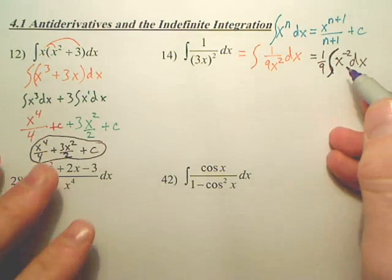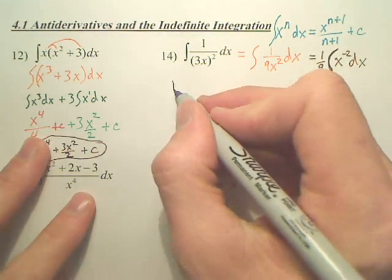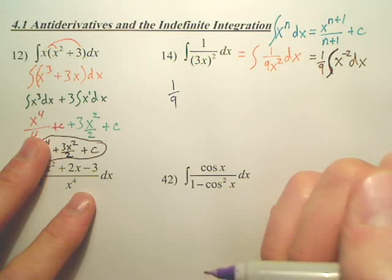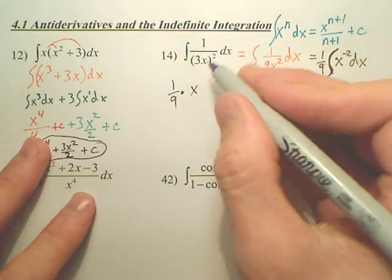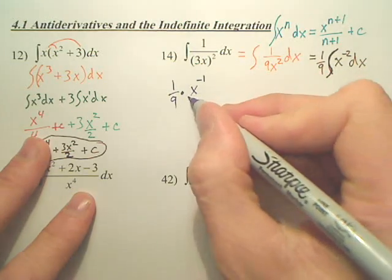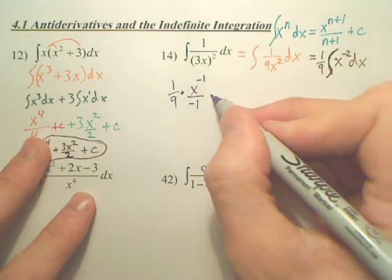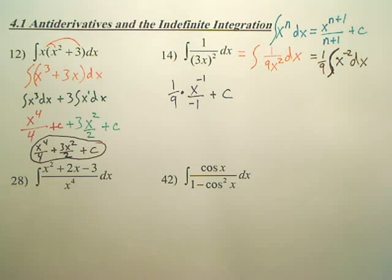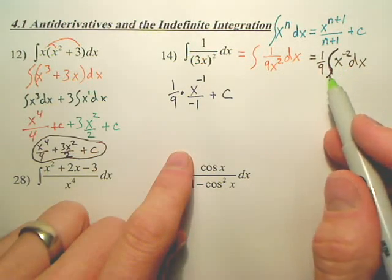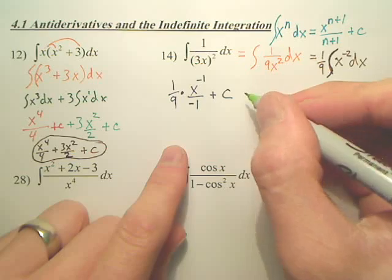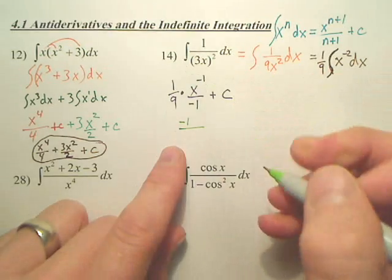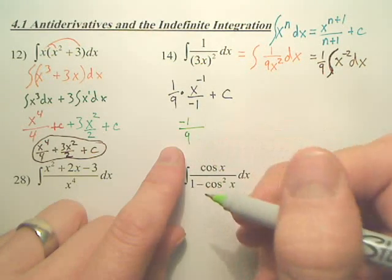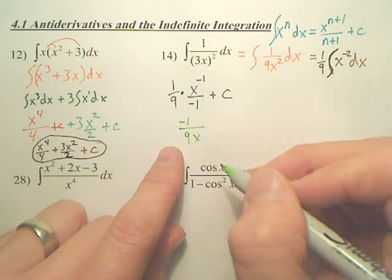So let's integrate this. The one-ninth stays out front. Then add one to the exponent — when you add one to negative two, isn't that x to the negative first? And then you divide by negative one, plus C. And we're done — just simplify it down. The key is you first have to change it to be more accessible and reasonable. So my answer is going to be negative one-ninth — bring the negative up — and this is going to be a 9, and the x is going to be on the bottom because of the power. Plus C.